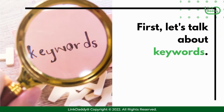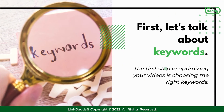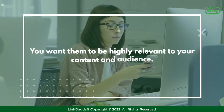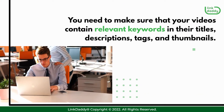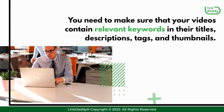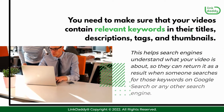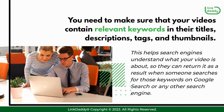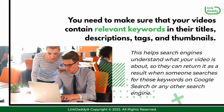First, let's talk about keywords. The first step in optimizing your videos is choosing the right keywords. You want them to be highly relevant to your content and audience. You need to make sure that your videos contain relevant keywords in their titles, descriptions, tags, and thumbnails. This helps search engines understand what your video is about, so they can return it as a result when someone searches for those keywords on Google Search or any other search engine.